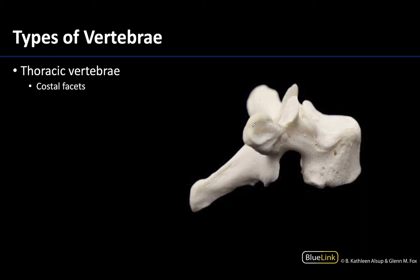Thoracic vertebrae are going to have what's referred to as costal facets. These will be associated with the body — this one right here is a hemifacet — and also the transverse process. These are smooth areas of bone which allow for articulation with the ribs specifically. You will only have these costal facets associated with the thoracic vertebrae, so that's something very distinct for the thoracic.